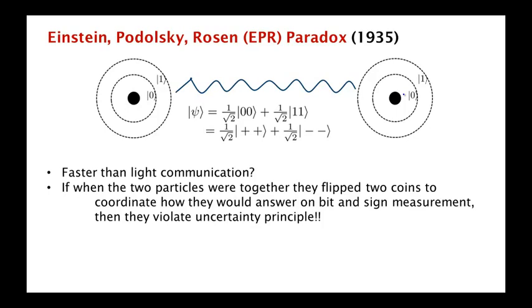What's the other possibility? Well, the other possibility is that when the two particles were together, they could have flipped two coins. One for the bit basis and one for the sign basis. And then they agreed that, let's say if the coin, maybe they agreed that for the bit basis, they would answer zero. And for the sign basis, they would answer minus. What's wrong with that? Well, what's wrong with that is the uncertainty principle.